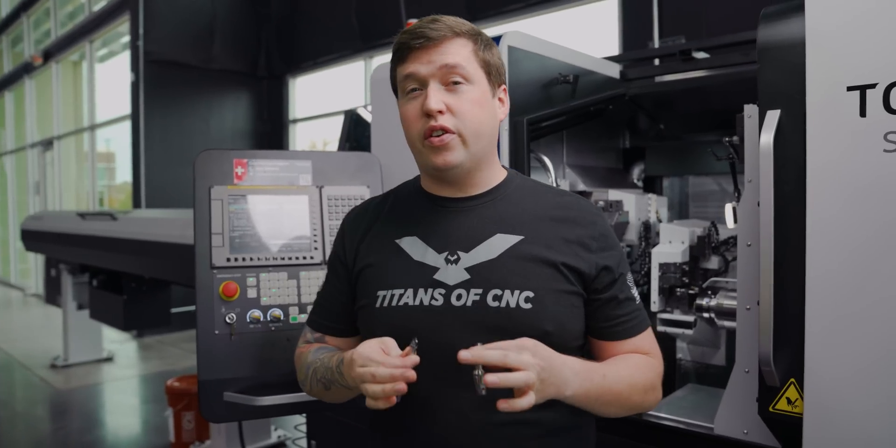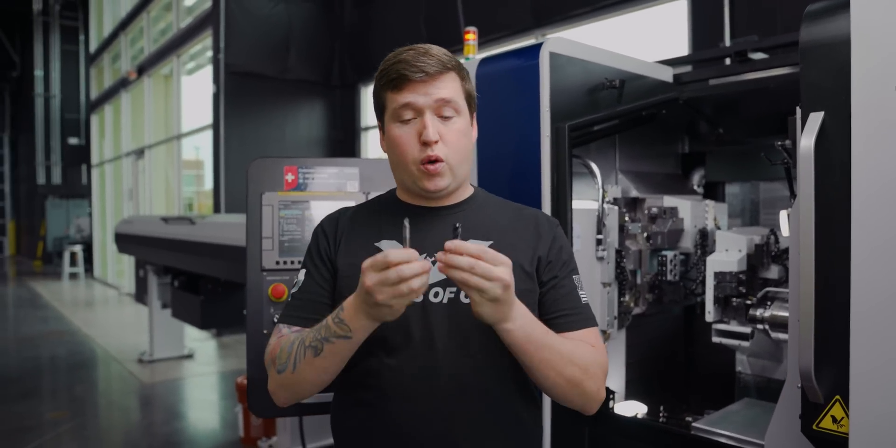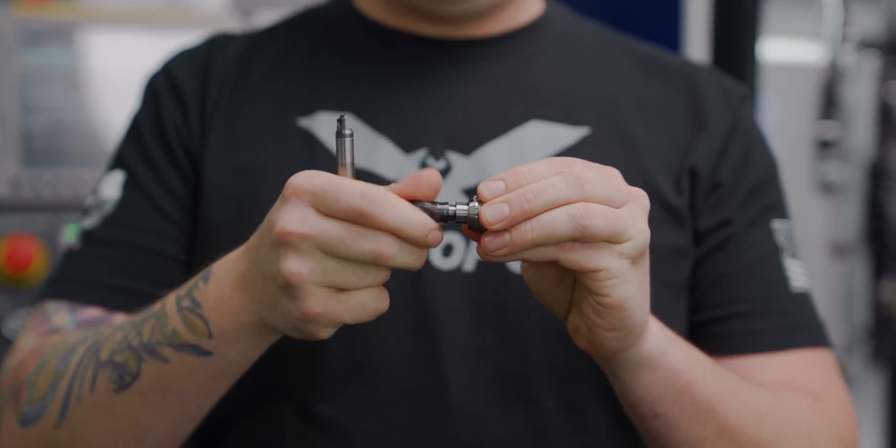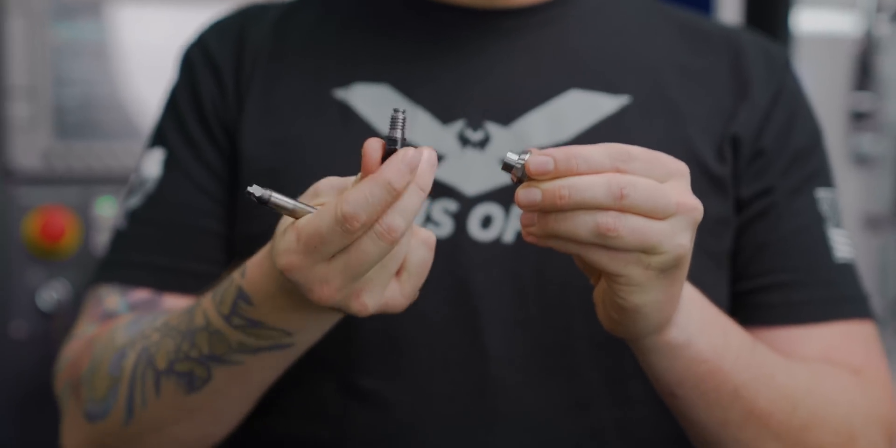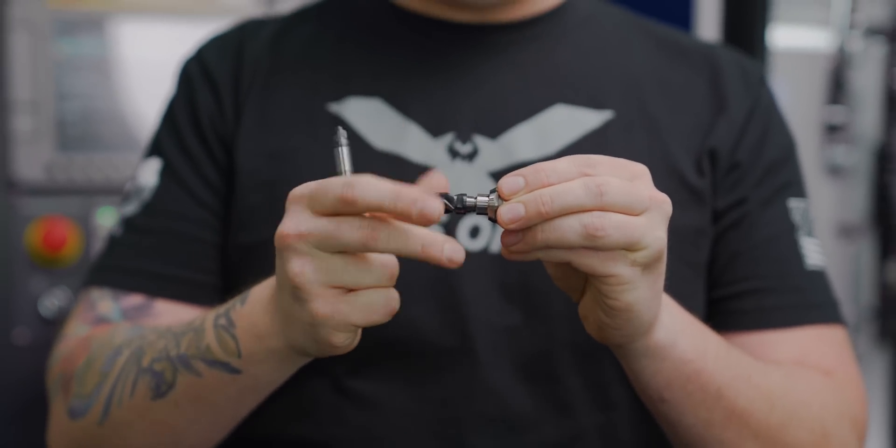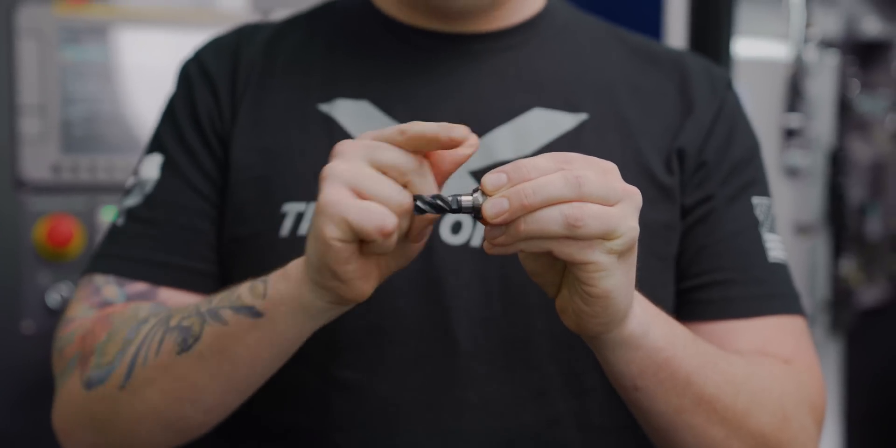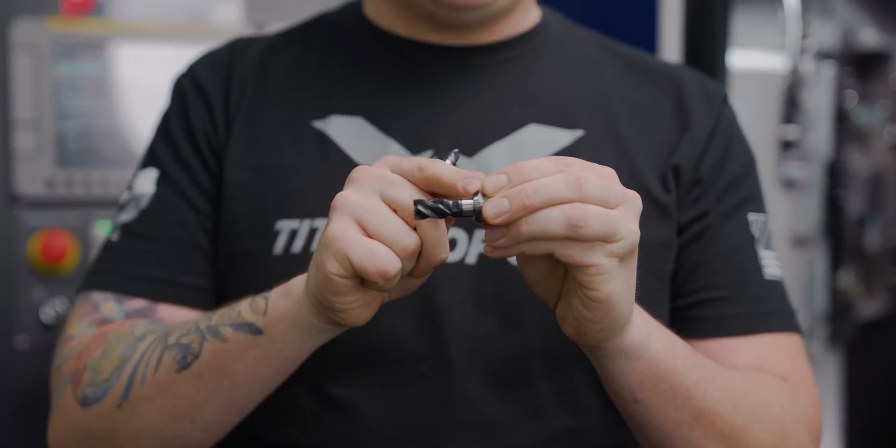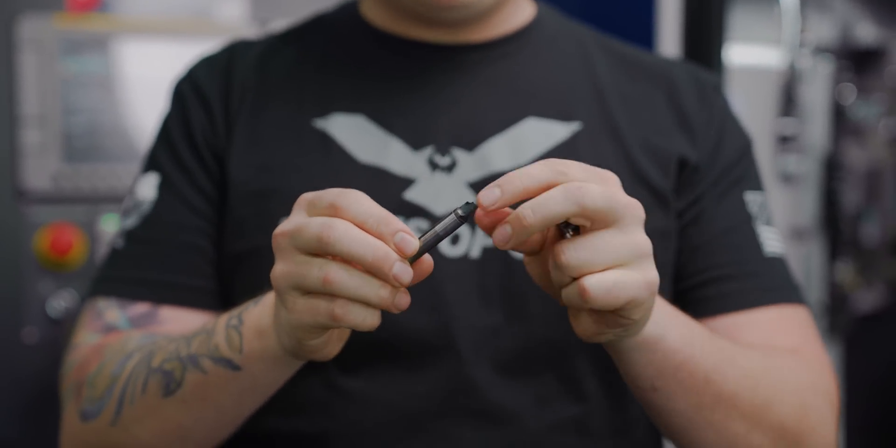So another thing you can do to mitigate problems on this machine is quick change tooling. Now I got this end mill right here from Kennametal and you'll notice that the insert comes out of the body. So when I change my end mill like this and I tighten it down, the body isn't moving so I don't have to touch anything off.